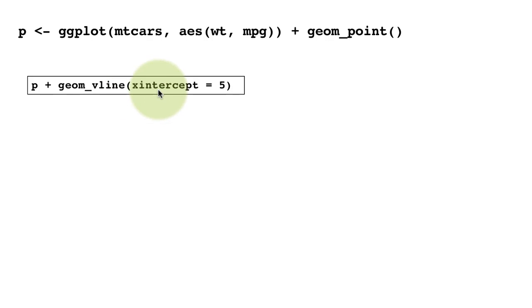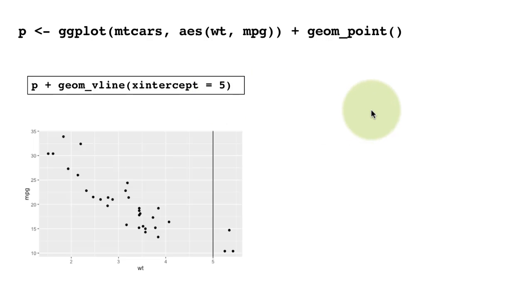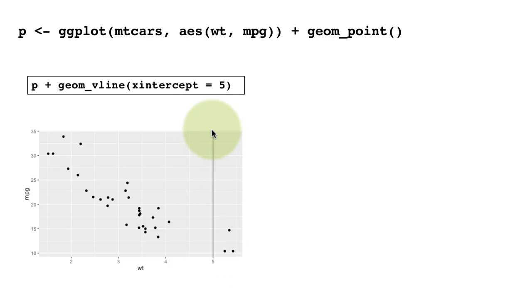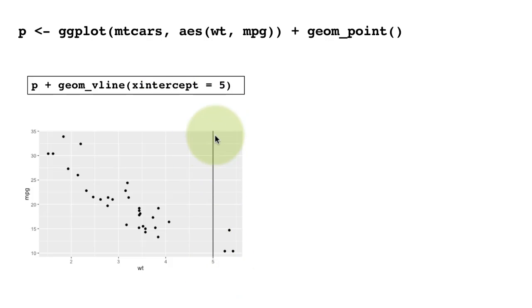The argument we pass is x-intercept equals 5. This creates a vertical line at 5 on the x-axis. Of course there's nothing significant about 5 — it's just an example to show you how to draw a vertical line.